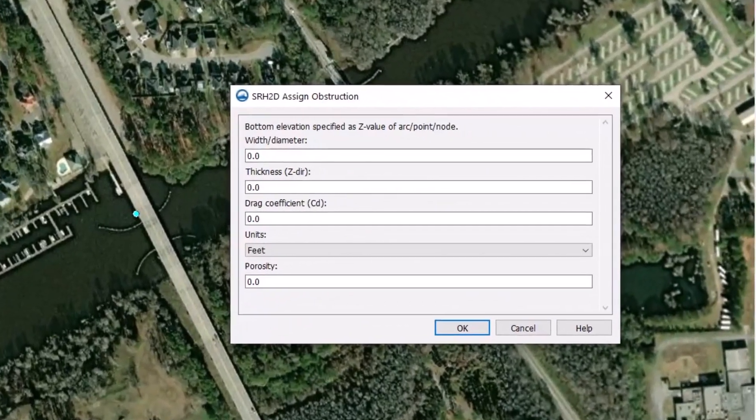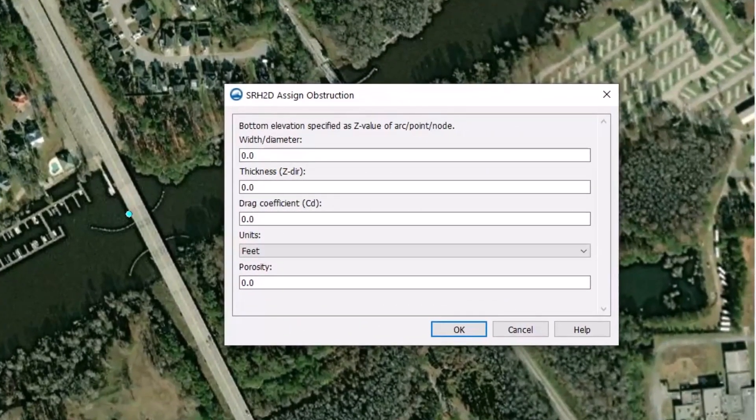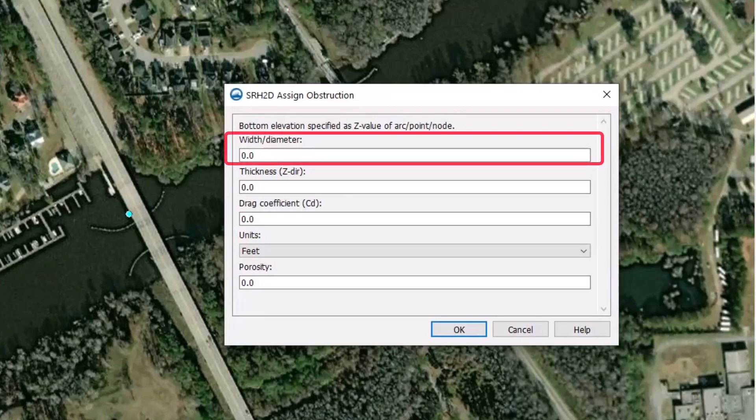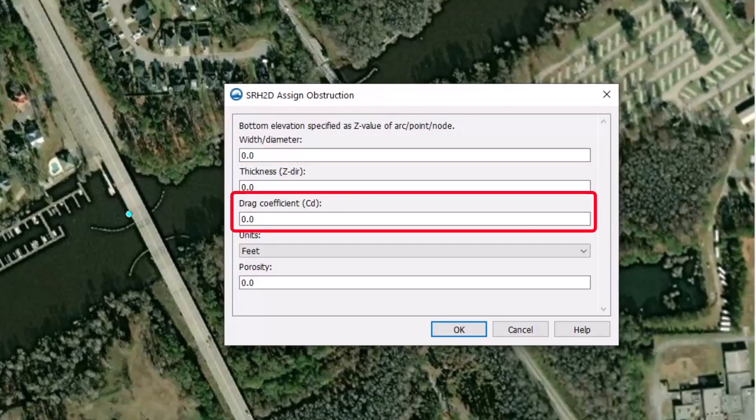Within the obstruction parameters window, the modeler can define the pier width or diameter, the bottom elevation, and a drag coefficient. The bottom elevation should be set below ground elevation for the bridge piers.